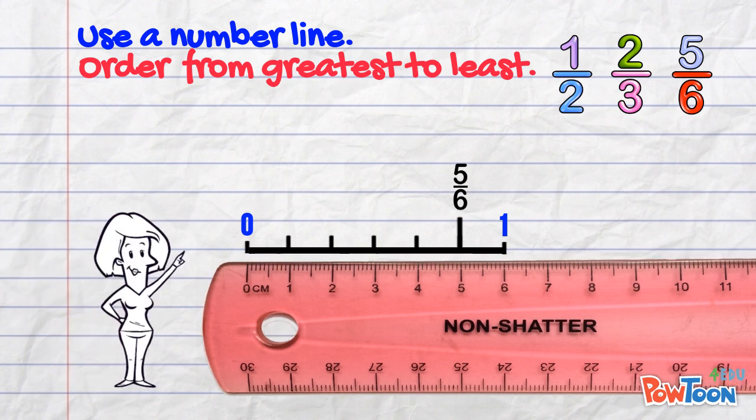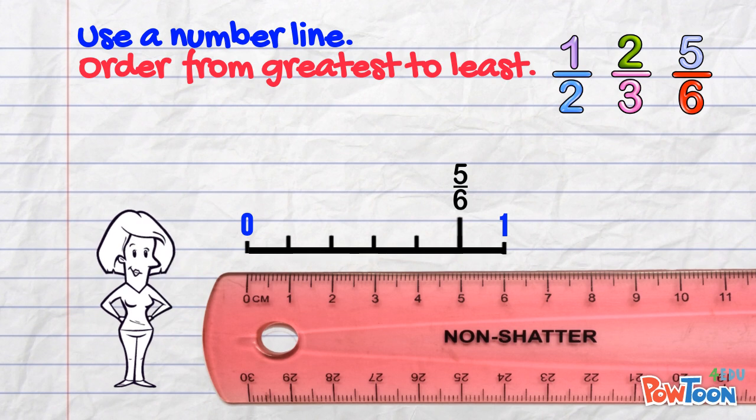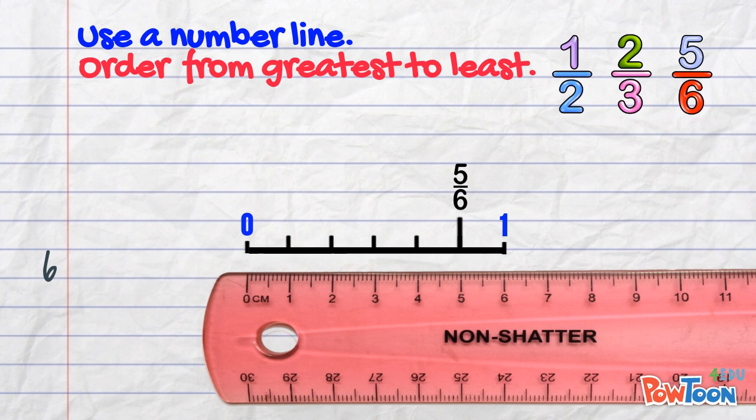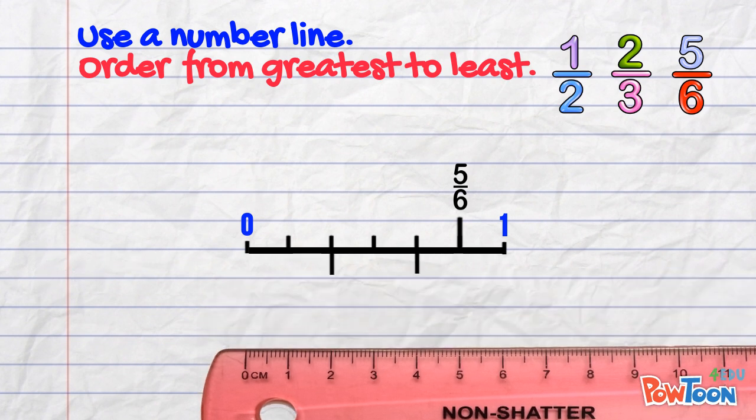On the bottom edge of the line I'm going to mark thirds. The whole line is 6cm and 6 divided by 3 is 2. So each third is 2cm wide. And here's 2 thirds.